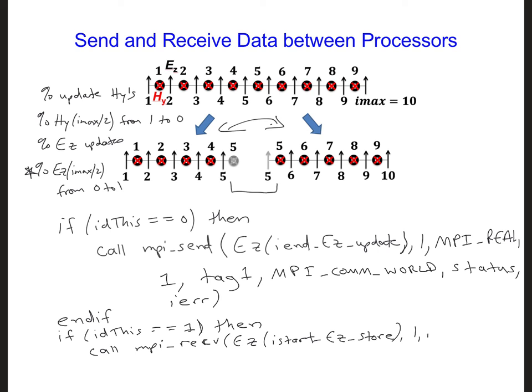We're going to receive one number. It is a real number. We're receiving it from processor 0. We want it to have the same tag number. It's part of the MPI communication set of processors that we have. We have our same status array and the error flag. And then we can put an endif to complete that if statement.